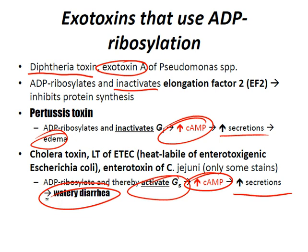Remember: pertussis inactivates Gi, so you inactivate the inhibitor, which leads to increased cyclic AMP. Cholera toxin, ETEC, and C. jejuni (only some strains) ADP ribosylate and activate Gs, which does the same thing, causing watery diarrhea.